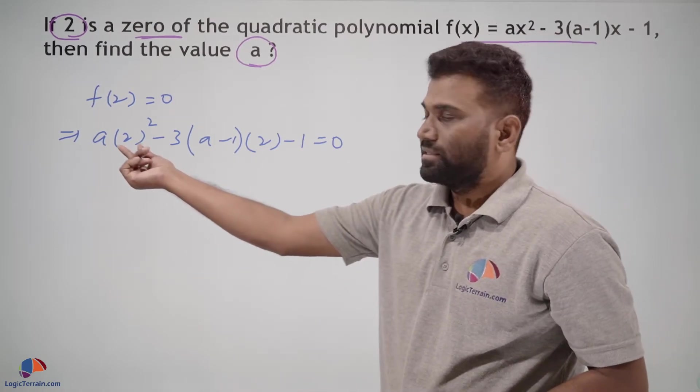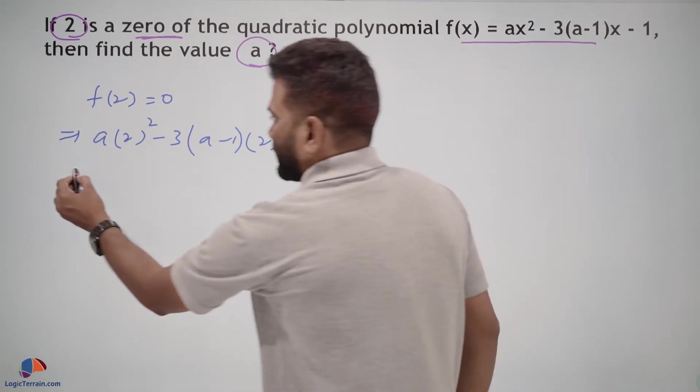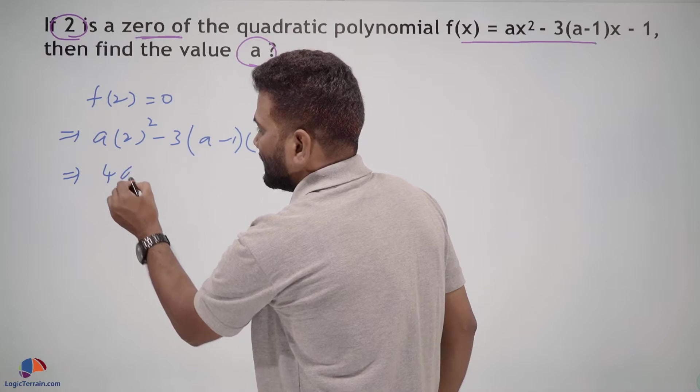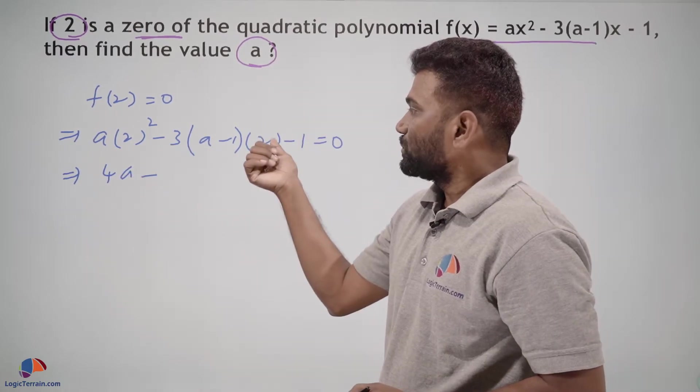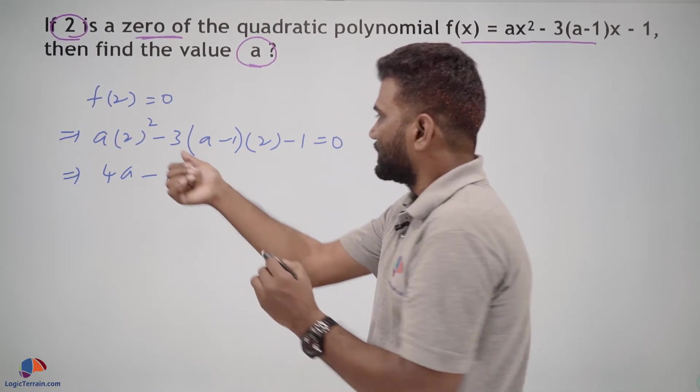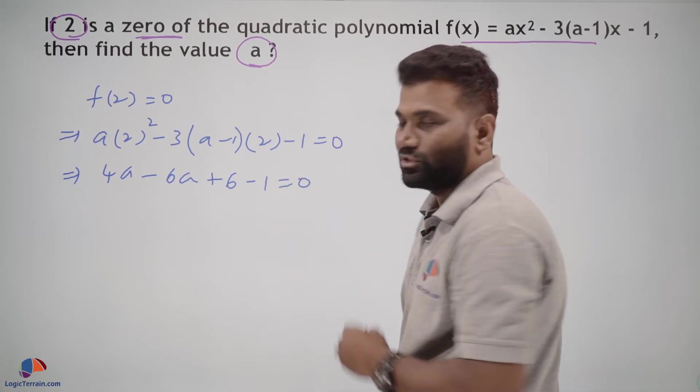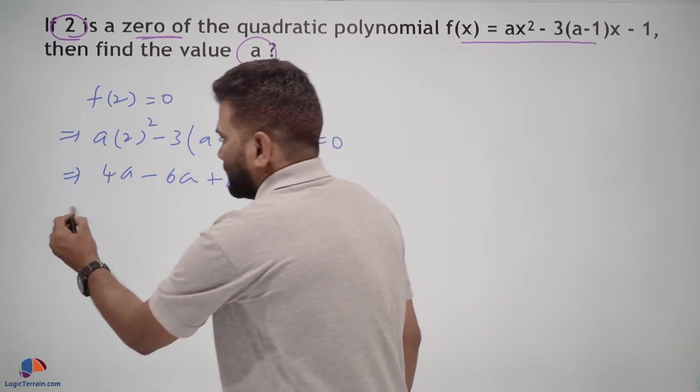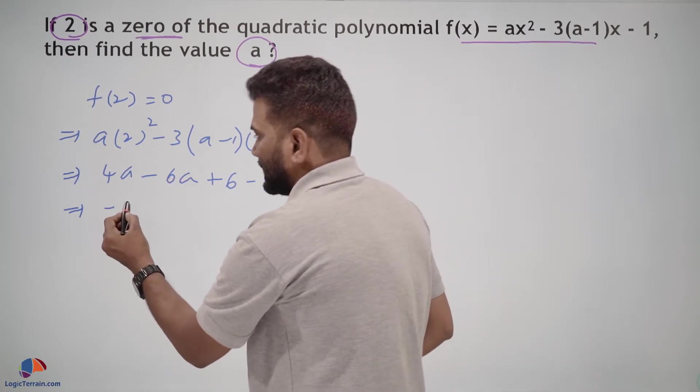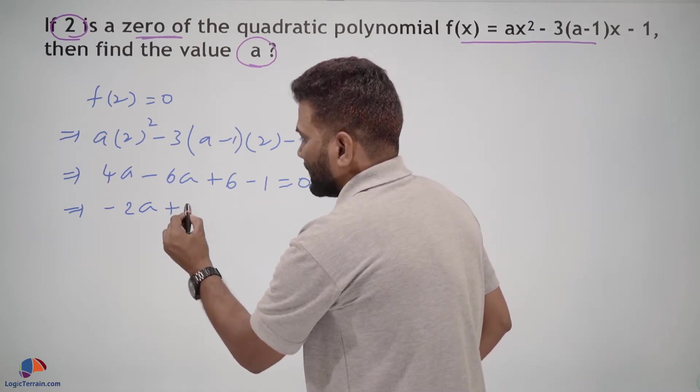For 2 square: 4 times a is 4a. Minus 3 twos are 6, 6 into a is 6a. Minus into minus is plus, 3 times 2 is 6, 6 times 1 is 6, minus 1 equals zero. Further, 4a - 6a becomes -2a plus 6 - 1, that is plus 5 equals zero.